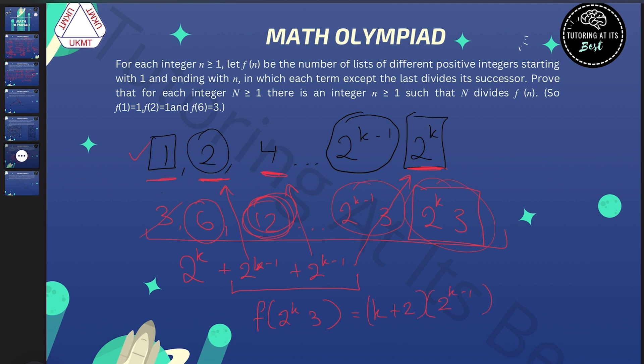So this is really good news for us, because we wanted something that had n as a factor. And this bracket of k plus 2 means that we can choose k in order to get any factor that we want. So if we want the factor of n, we can simply take f of 2 to the power of (n minus 2) times 3, and that will be n times 2 to the power of (n minus 3). And this will work provided that n is big enough.